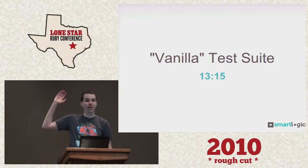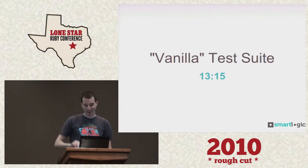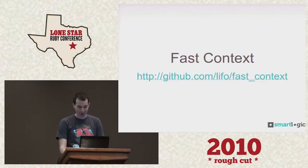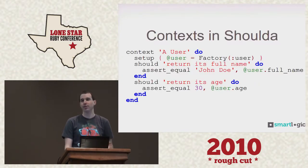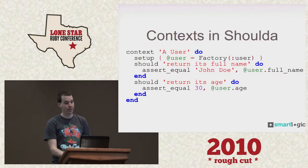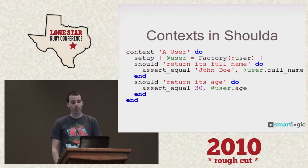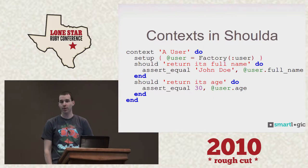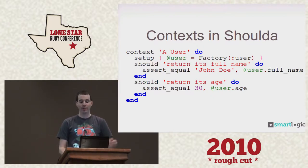At this point, everyone should have guessed something lower than 13 minutes and 15 seconds. So, fast context. Fast context is for contexts in Shoulda. In this case, we have a context that has a setup, and then we have two should blocks that run inside that context. Both of those should blocks — both assertions — are run after that setup is run. This is also a lot like before_all for RSpec and before blocks in Cucumber.